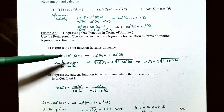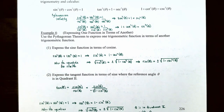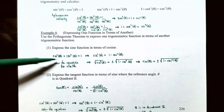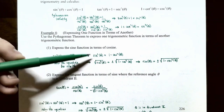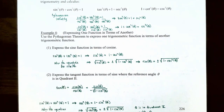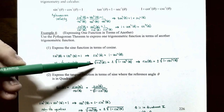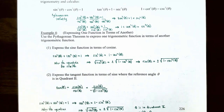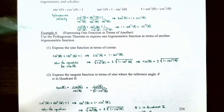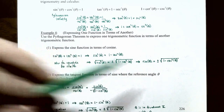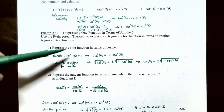Starting with sine squared of theta plus cosine squared of theta equals 1, if we solve for sine of theta, we isolate sine squared of theta to get 1 minus cosine squared of theta after subtracting cosine squared from both sides. Taking the square root of both sides to cancel the square power, we get sine of theta equals plus or minus the square root of 1 minus cosine squared of theta. Note that the square root of 1 minus cosine squared of theta is not equal to 1 minus cosine of theta, so this is completely simplified. Sine is plus or minus the square root of 1 minus cosine squared of theta.